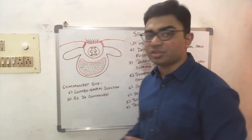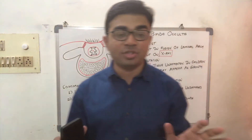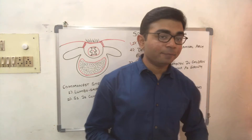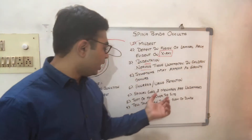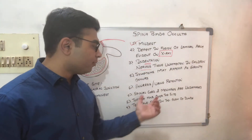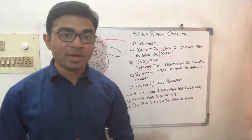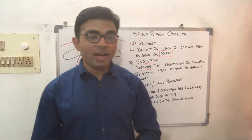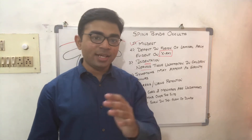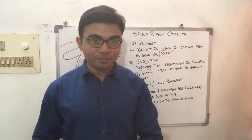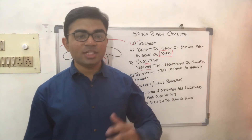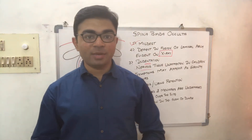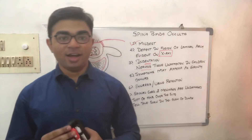The spinal cord and meninges — the structures within the vertebral canal — are completely undamaged and intact in spina bifida occulta. Additional clinical signs include a tuft of hair over the site of the lesion and a tail sign, both of which may be observed.